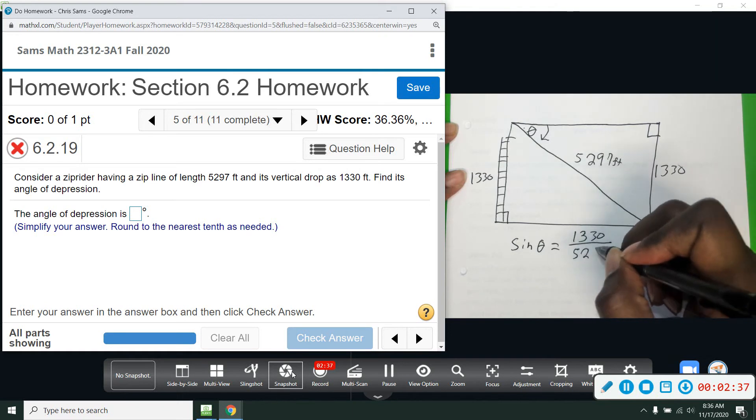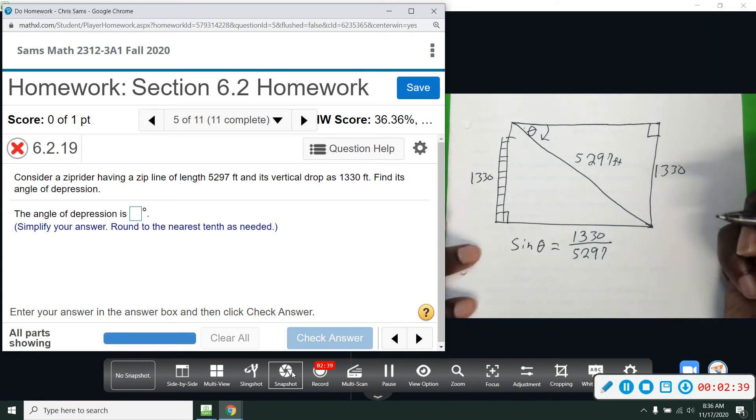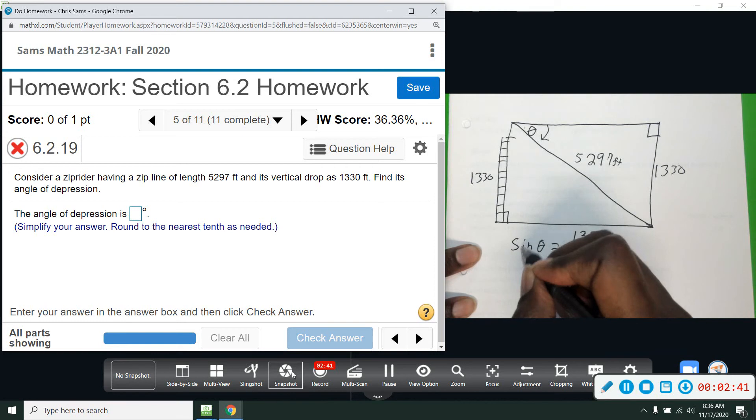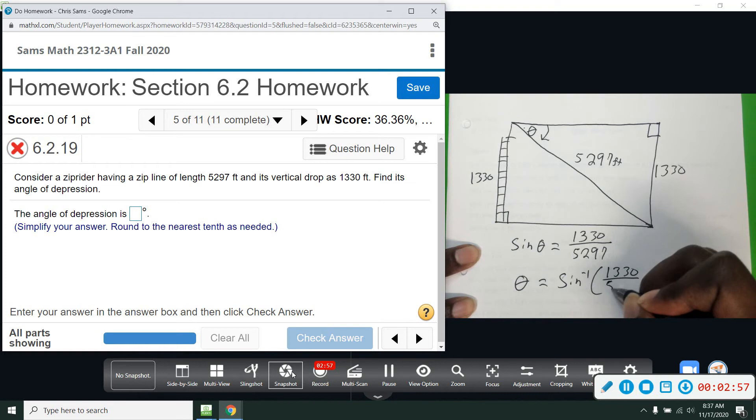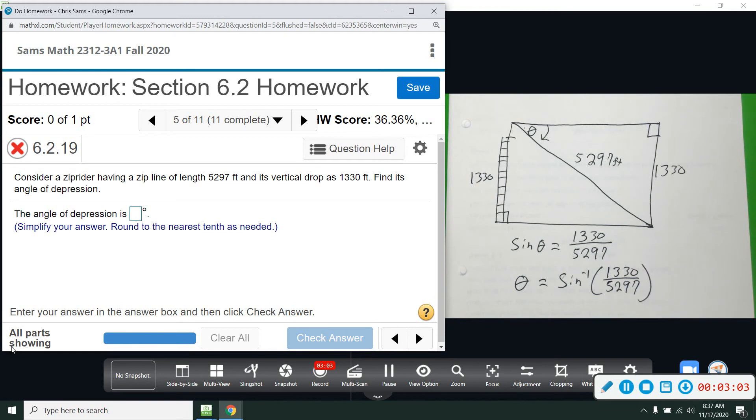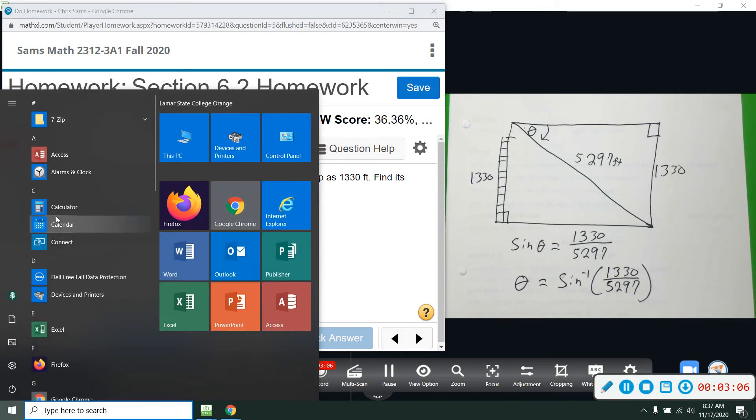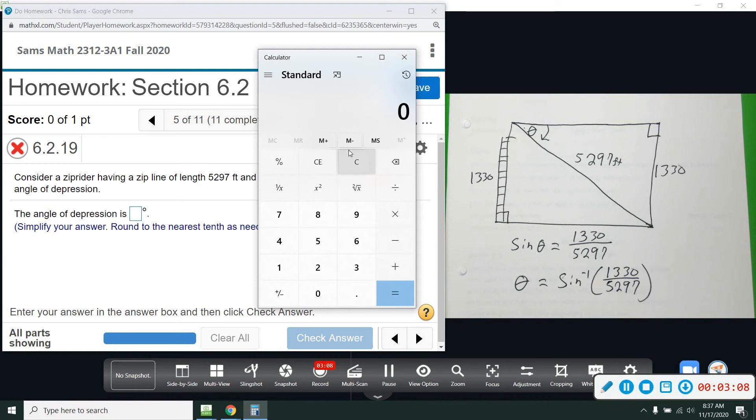So sine of this angle theta is equal to opposite, which is 1330, over hypotenuse, which is 5297. And then we need to do the inverse sine to get this off. So theta is by itself, so we have theta equals inverse sine, some may say arc sine, it's the same. So we have theta equals 1330 divided by 5297.